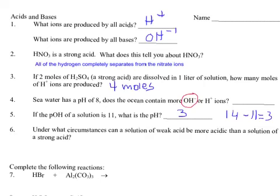Number six, under what circumstances can a solution of weak acid be more acidic than a solution of strong acid? Well, the thing to keep in mind is, what makes something acidic is the presence of hydrogen ions. That's what makes something acidic. So if you have more hydrogen ions, you're more acidic. So the answer to this question would be,